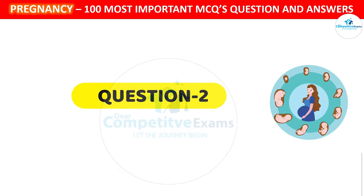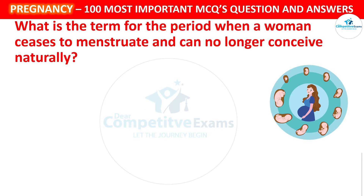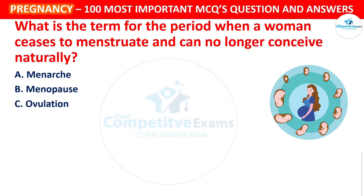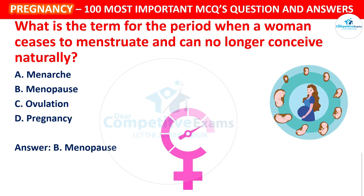Question number two: What is the term for the period when a woman ceases to menstruate and can no longer conceive naturally? Options: Menarche, Menopause, Ovulation, or Pregnancy. The correct answer is Menopause. Menopause is the natural biological process that marks the end of a woman's reproductive years.